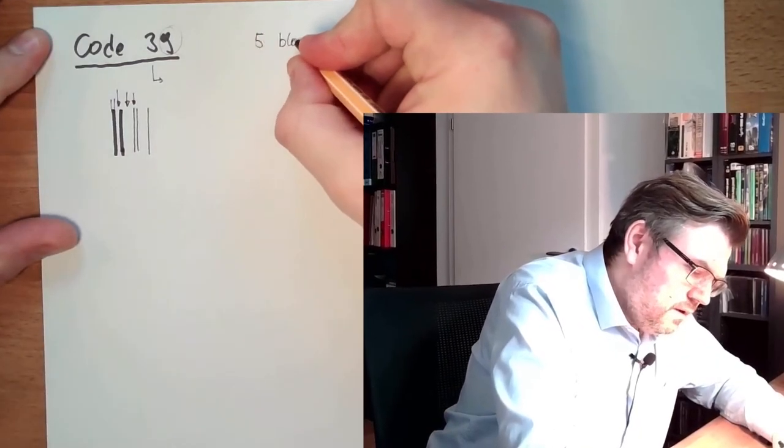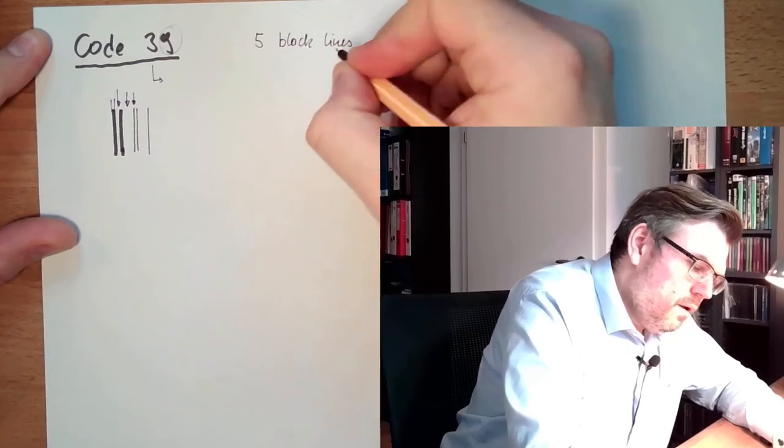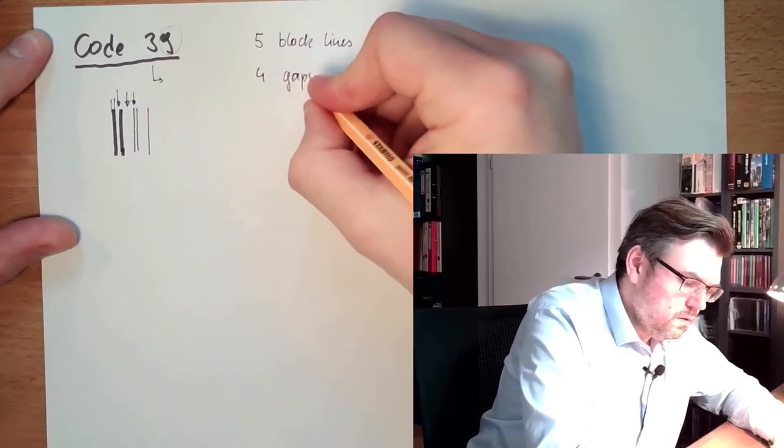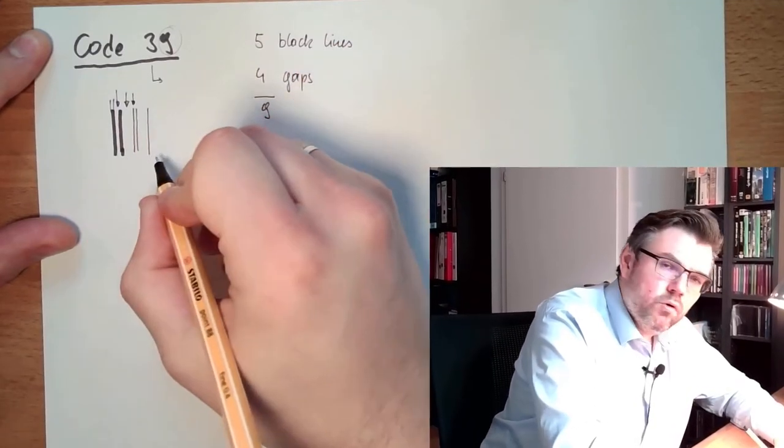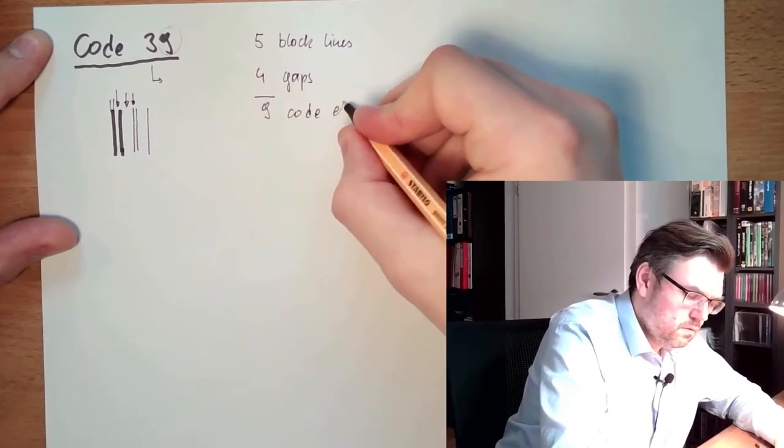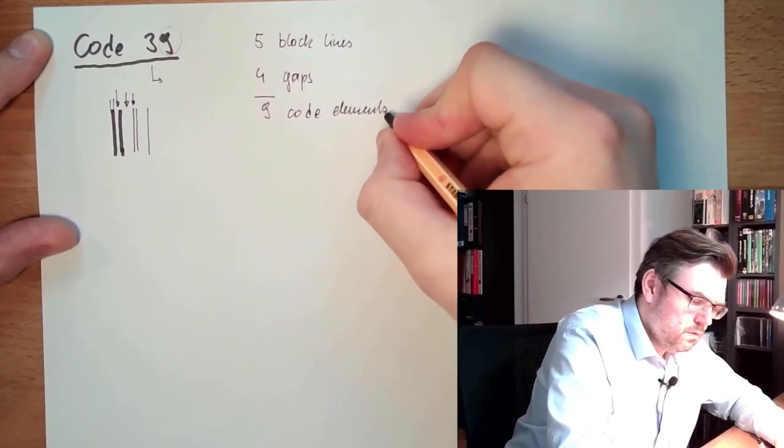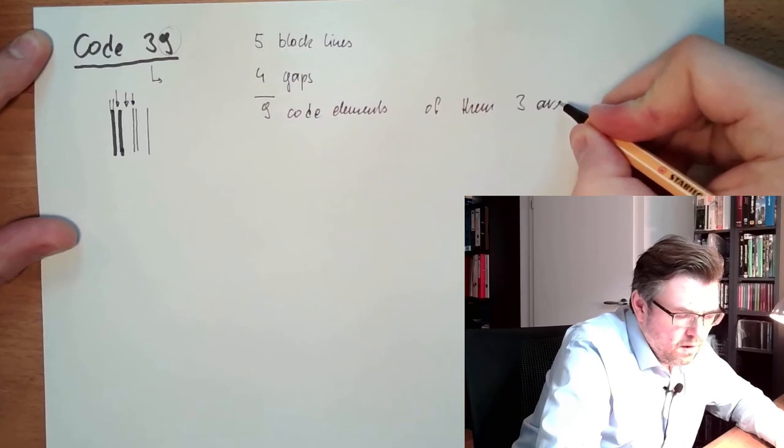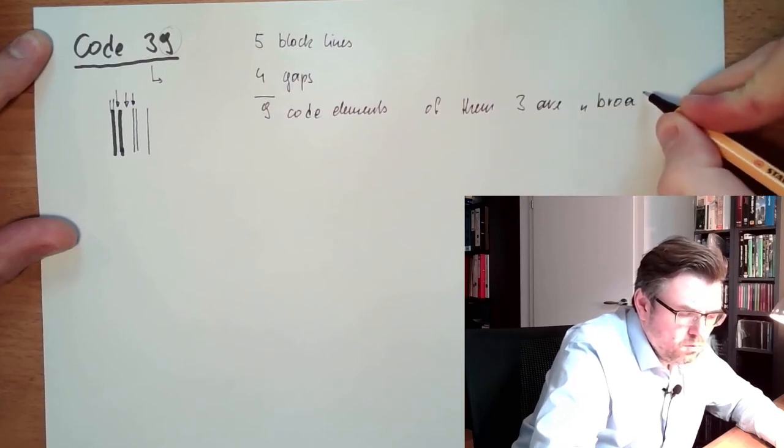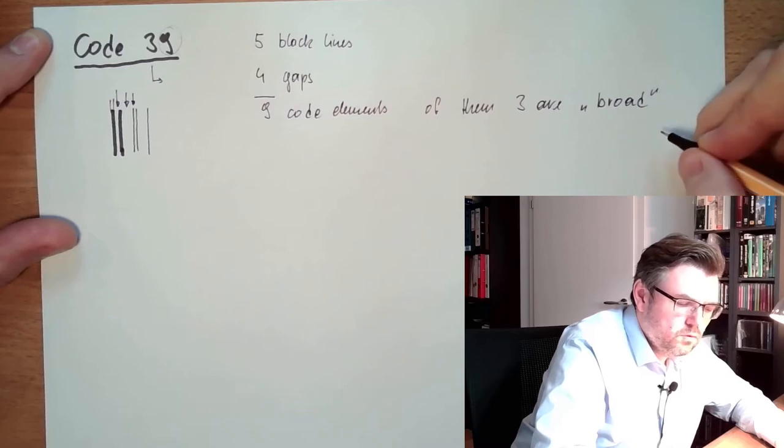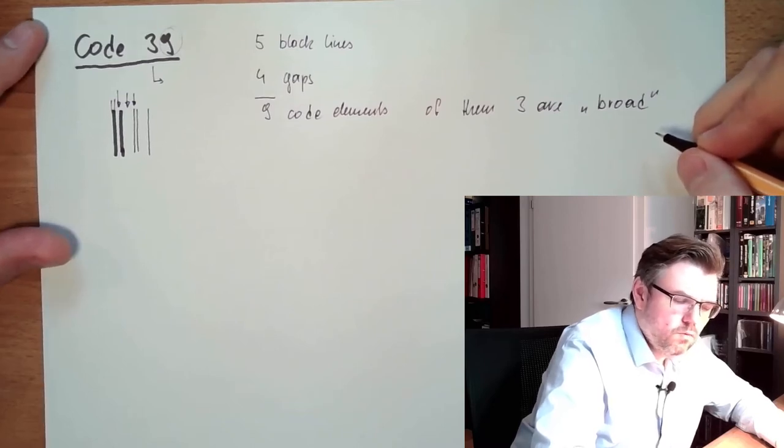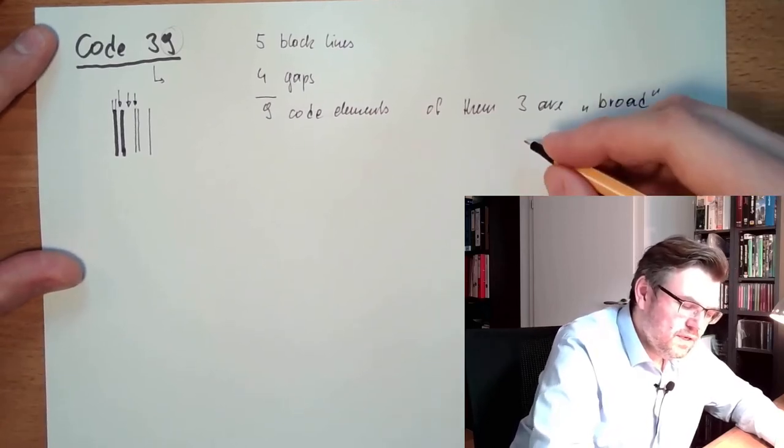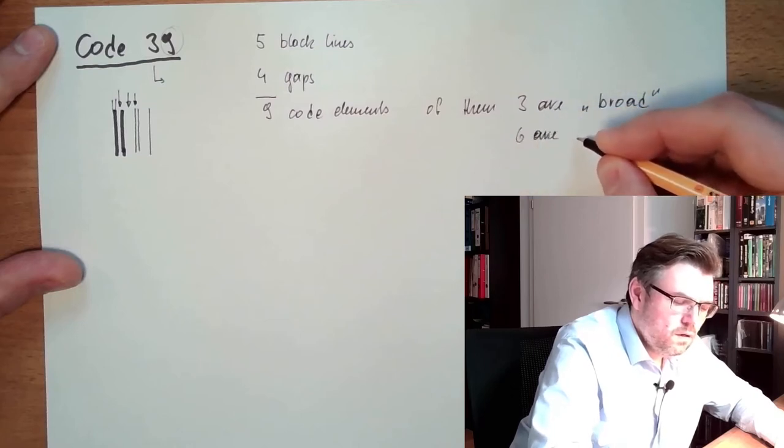Five black lines, between these five black lines four gaps, makes nine code elements. Of them three are broad or thick, and the rest, so six, are thin.